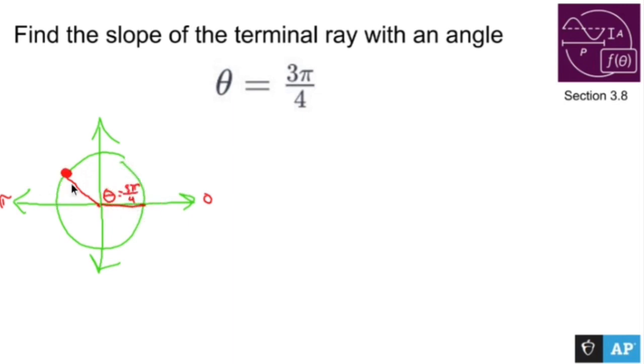Well, how do I find the slope of that? Well, if this is 0, 0 and I know that 3 pi over 4 on the unit circle gets me negative root 2 over 2 and positive root 2 over 2. If I know that,